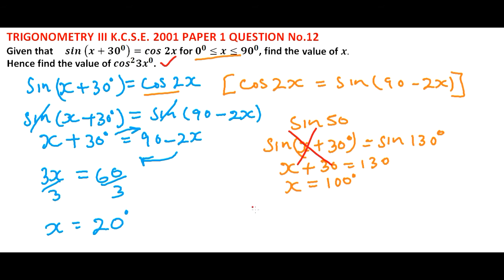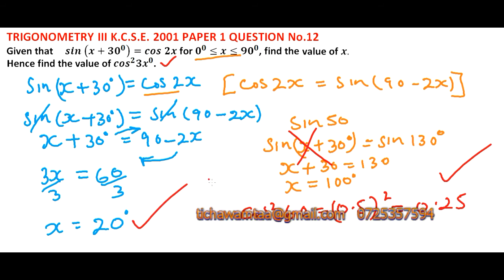Since we now have x, this means that cos squared 3 times 20 is 60 is equals to 0.5 into bracket squared, which is the same as 0.25. So that is how you work out the question and you earn yourself 2 marks.